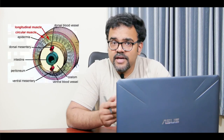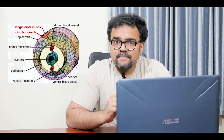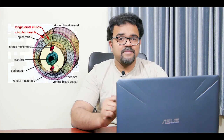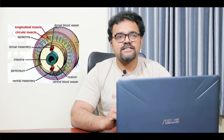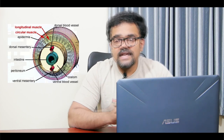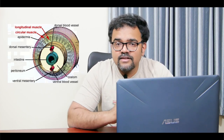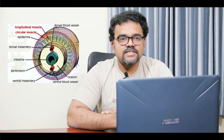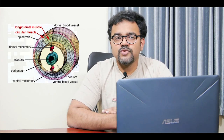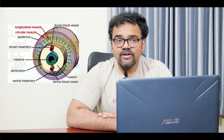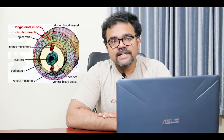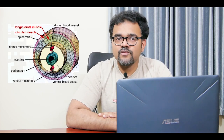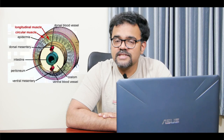In Nereis, the body wall is divisible into a thin cuticle, a single-layered epidermis, muscle layers, and parietal epithelium. The muscular layer consists of an outer circular layer, an inner longitudinal layer, and an oblique layer of muscles. The body of Nereis in transverse section looks like a tube-within-a-tube plan. The wall of the outer large tube is the body wall and the wall of the inner small tube is the gut wall.